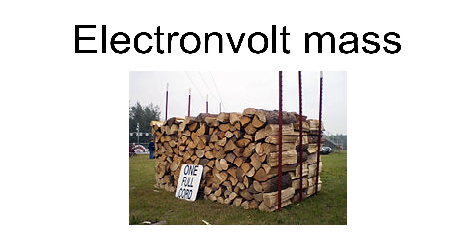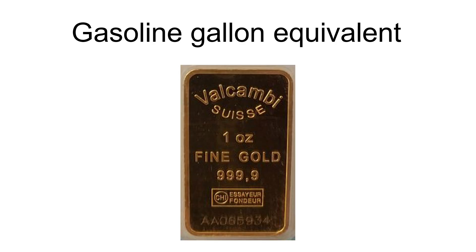It is common in particle physics, where mass and energy are often interchanged, to use eV/c², where eV, electron volt, is the kinetic energy of an electron accelerated over 1 volt, 1.6 × 10⁻¹⁹ joules, and c is the speed of light in a vacuum, from E = mc². 1 AMU equals 931.46 MeV/c². Even more common is to use a system of natural units with c set to 1, and simply use eV as a unit of mass. In 2011, the United States Environmental Protection Agency introduced the gallon gasoline equivalent as a unit of energy; it is defined as 33.7 kilowatt-hours, or about 1.213 × 10⁸ joules. Efficiency or fuel economy can be given as miles per gallon gasoline equivalent.